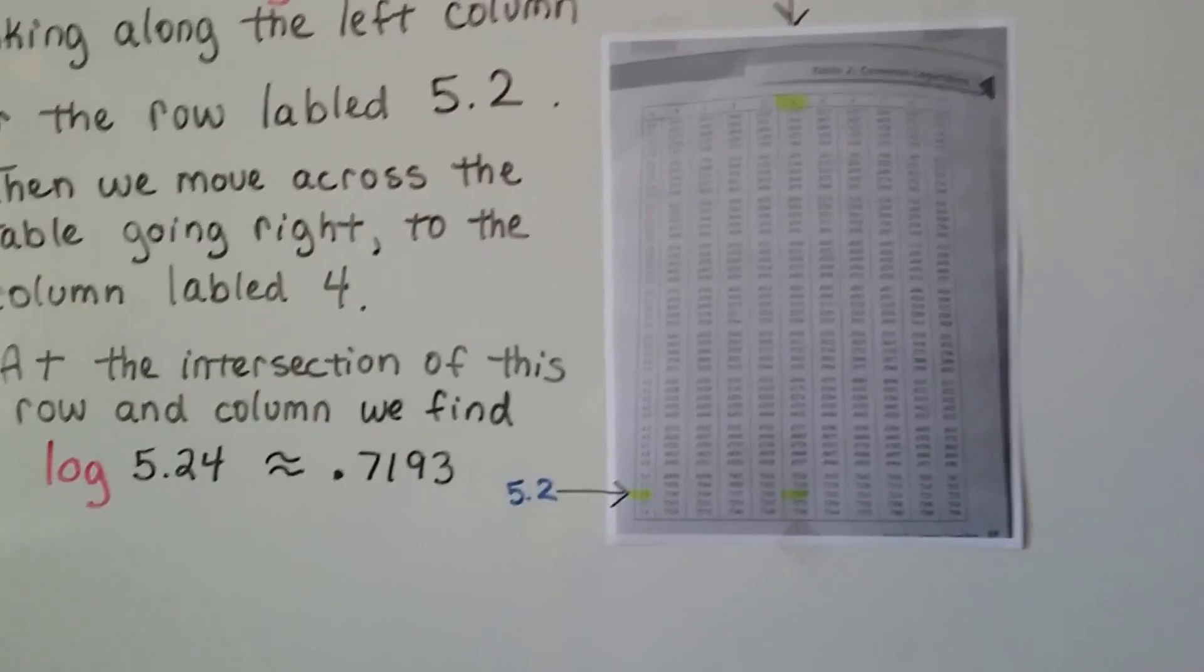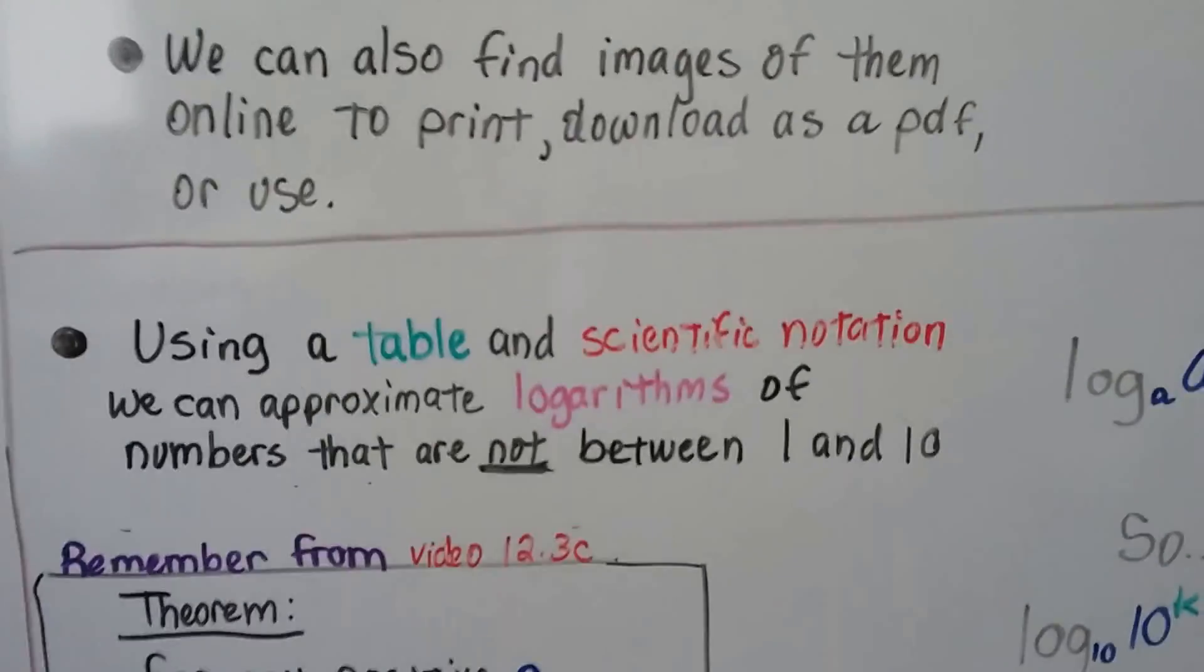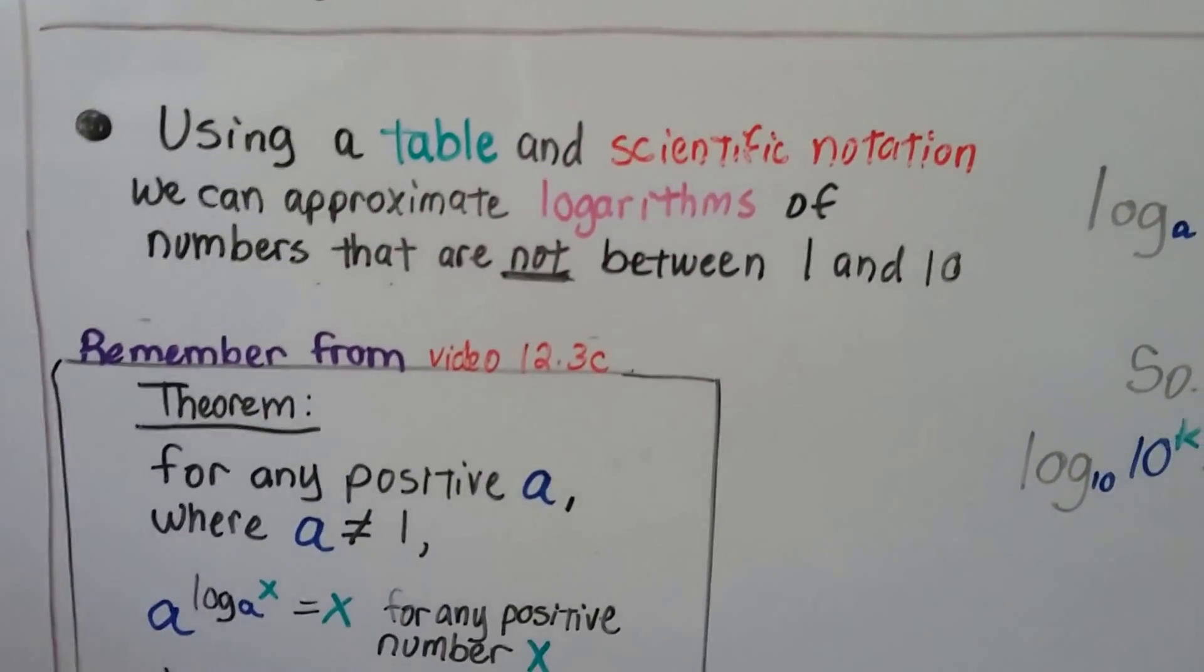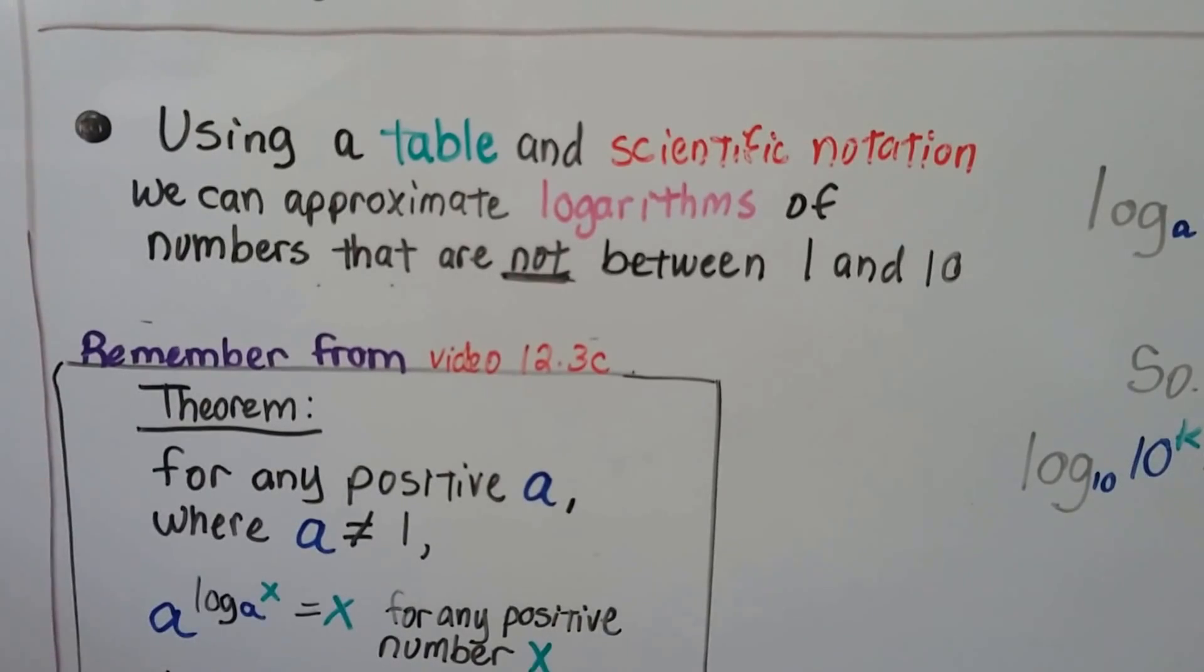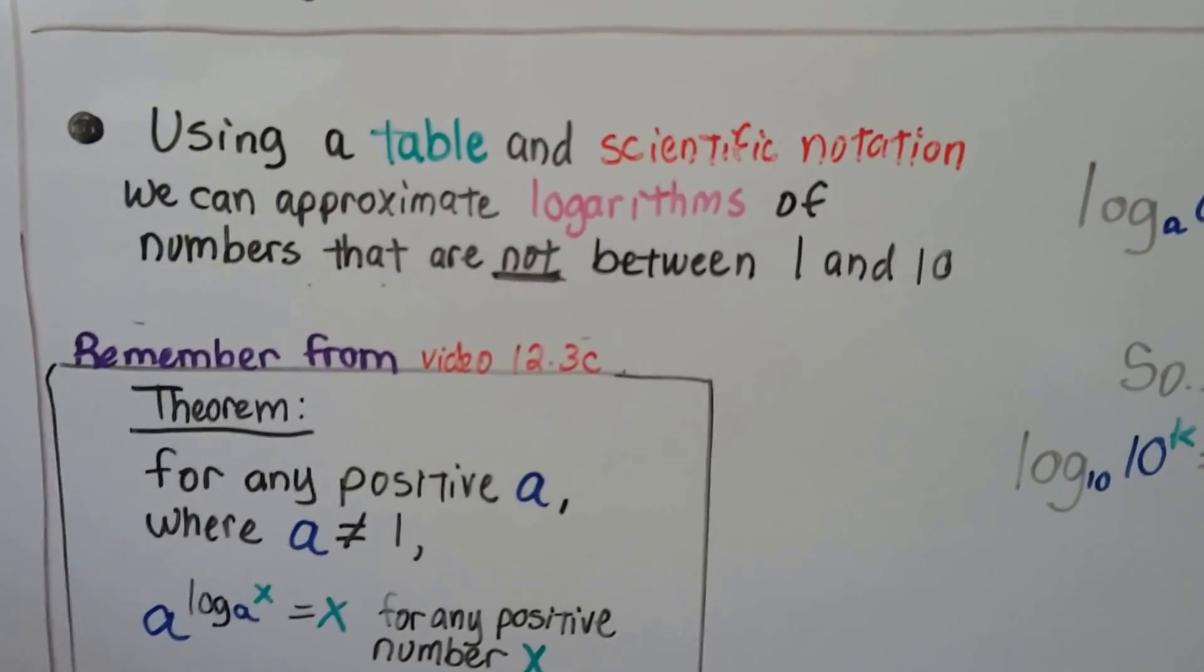Now we're going to use this 0.7193 a lot. Using a table and scientific notation, we can approximate logarithms of numbers that are not between 1 and 10.